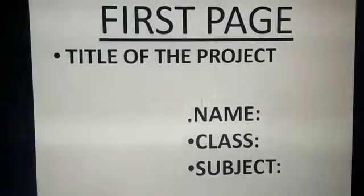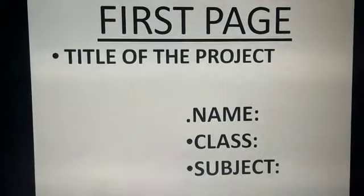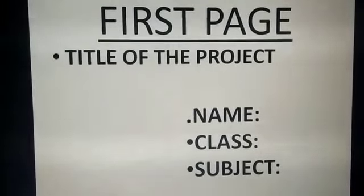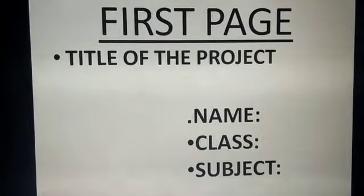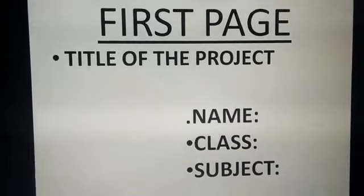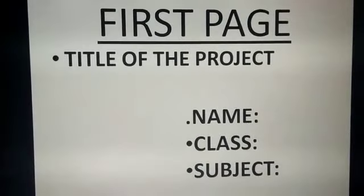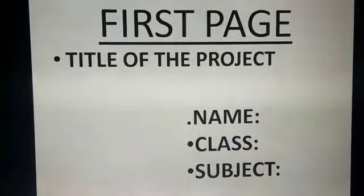Now, children, on the first page you will write the title of the project. You can write it in a semicircle form. Then you have to write the name, class and subject.